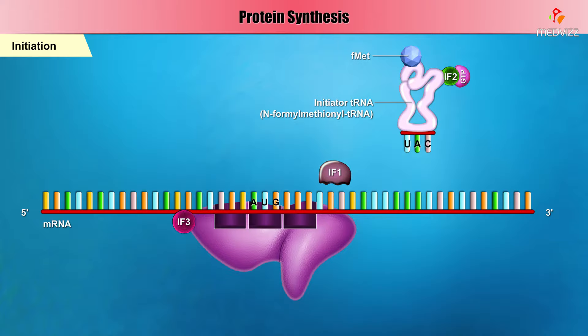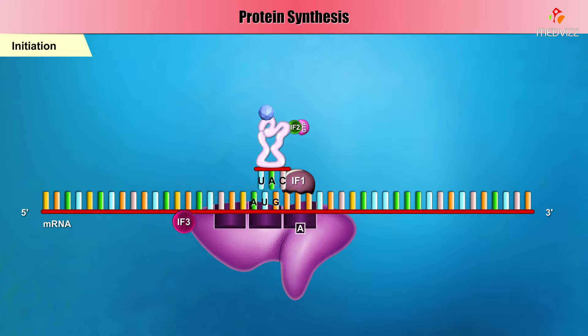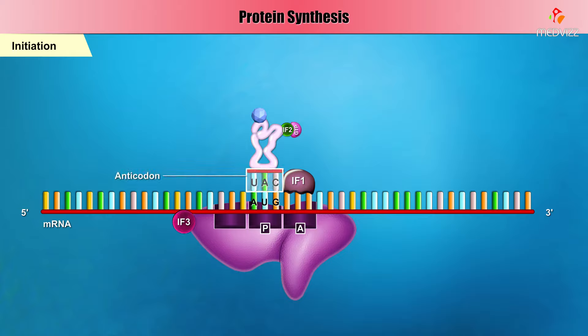IF1 binds to the small subunit at a location called the A site, where incoming tRNAs normally bind. The first tRNA, called N-formylmethionyl tRNA, thus enters another site, called the P site. Note that the initiator tRNA has been escorted to the P site by IF2, which is bound to GTP, a high-energy molecule similar to ATP. The anticodon of the tRNA is complementary to the AUG start codon.